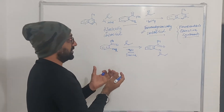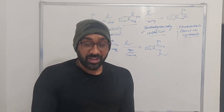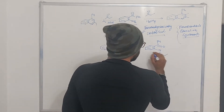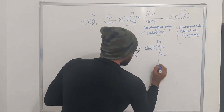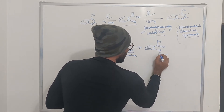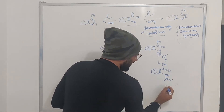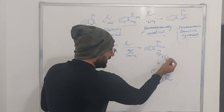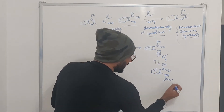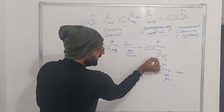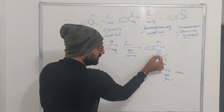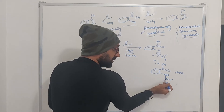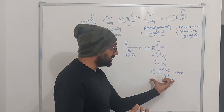Under acidic conditions — and generally imine formation requires acidic conditions — it is the thermodynamically stable imine that is formed. This imine will undergo enolization under acidic conditions to give the thermodynamically stable enol. There were two possibilities: you can have one enolate or another, but under acidic conditions, it is the more substituted imine which is formed, because it is more stable.